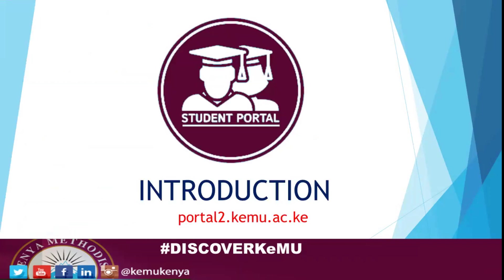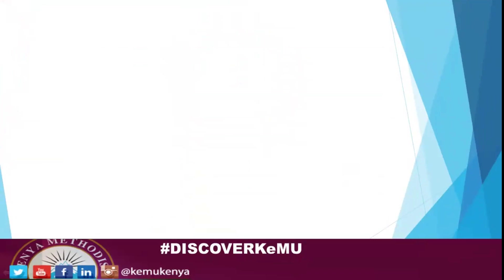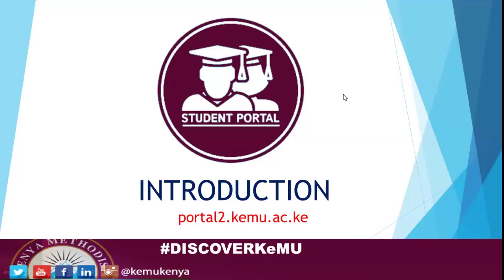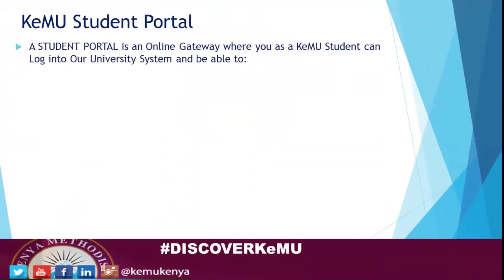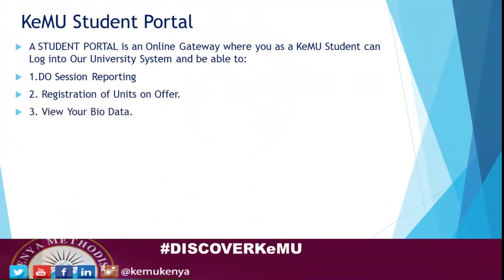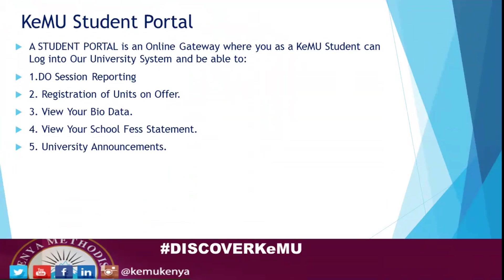So for introduction, the KMU Student Portal is an online gateway where you as a KMU student can log into the university system and be able to do the following: the first thing is session reporting; the second thing is registration of units on offer, and I'm going to show you how to get the units on offer; then view your bio data; then view your school fee statement; and university announcements — any announcement from the Office of the Registrar you'll be able to view in the student portal.